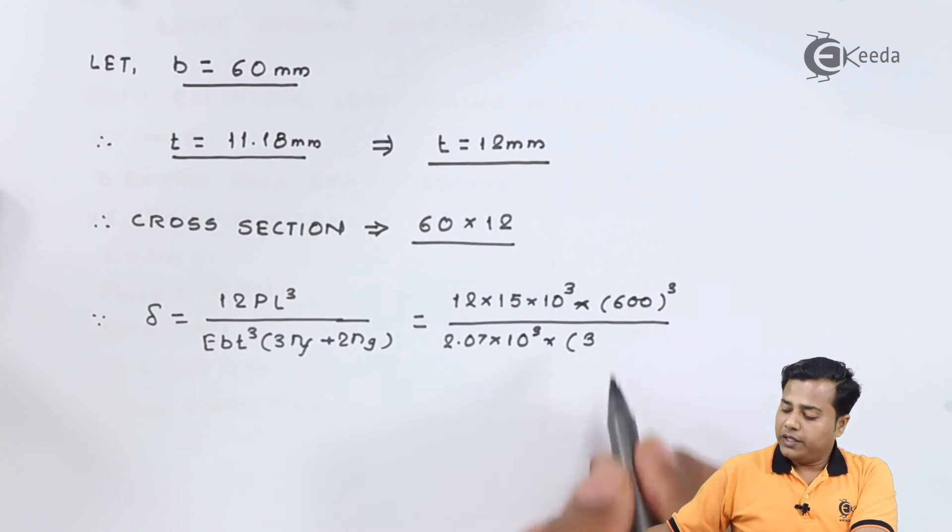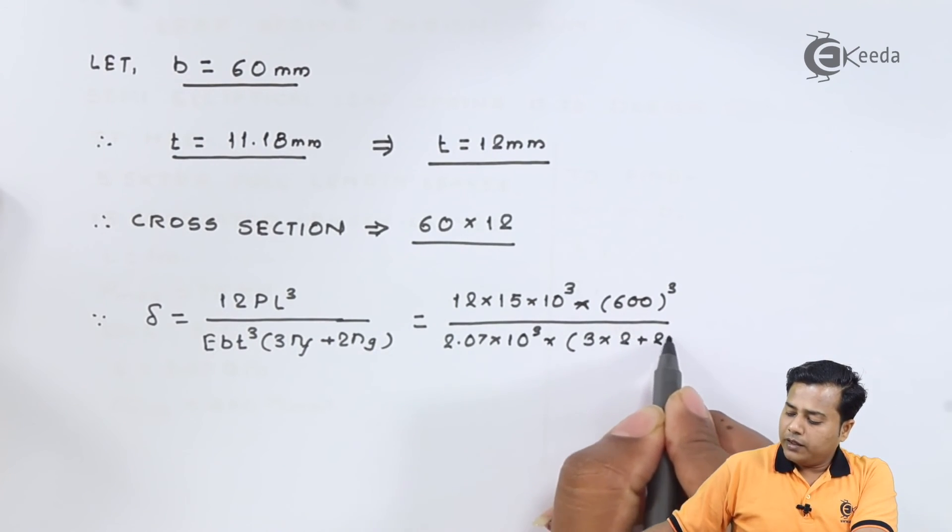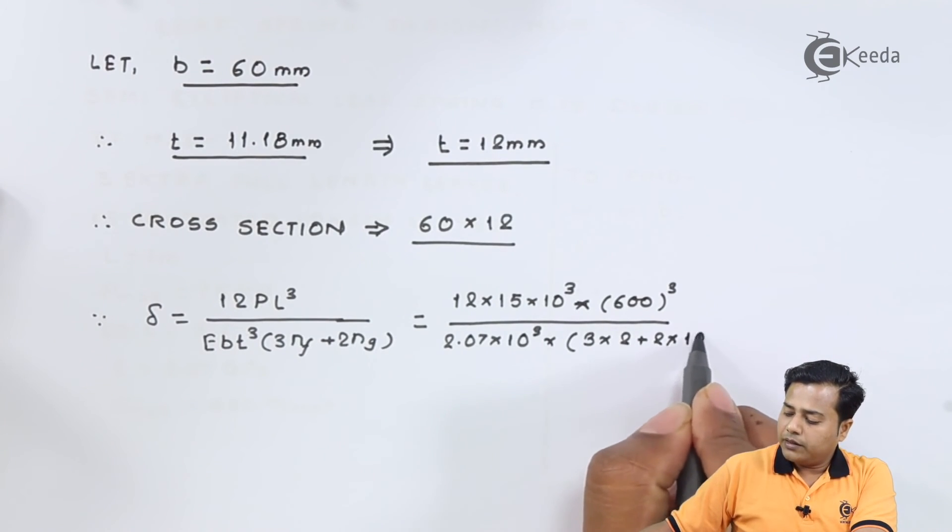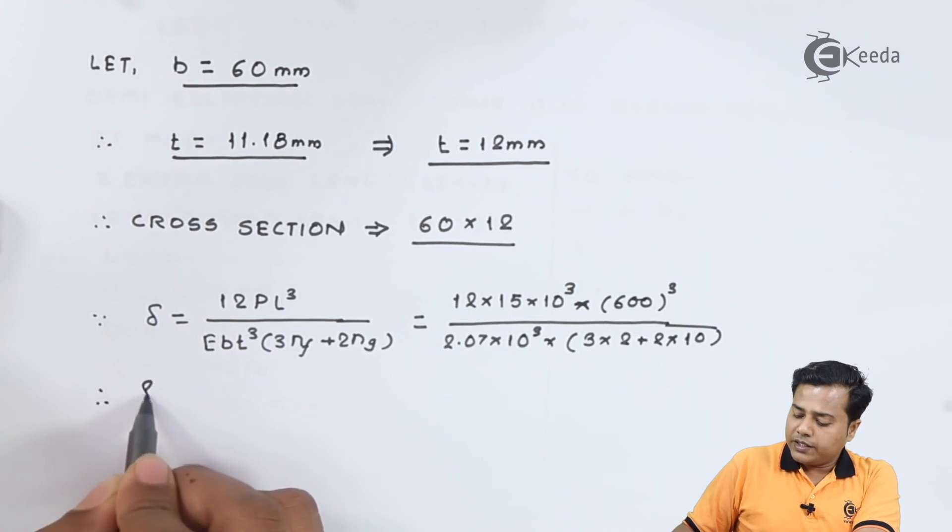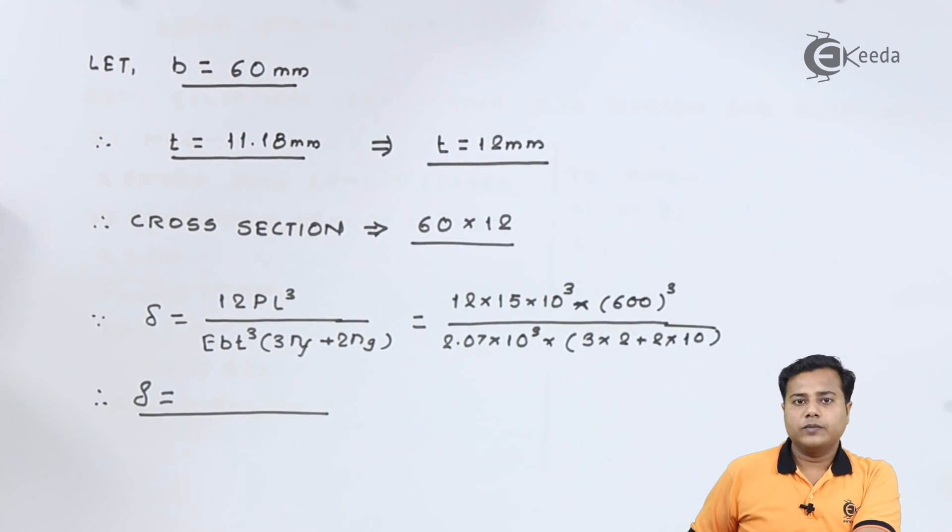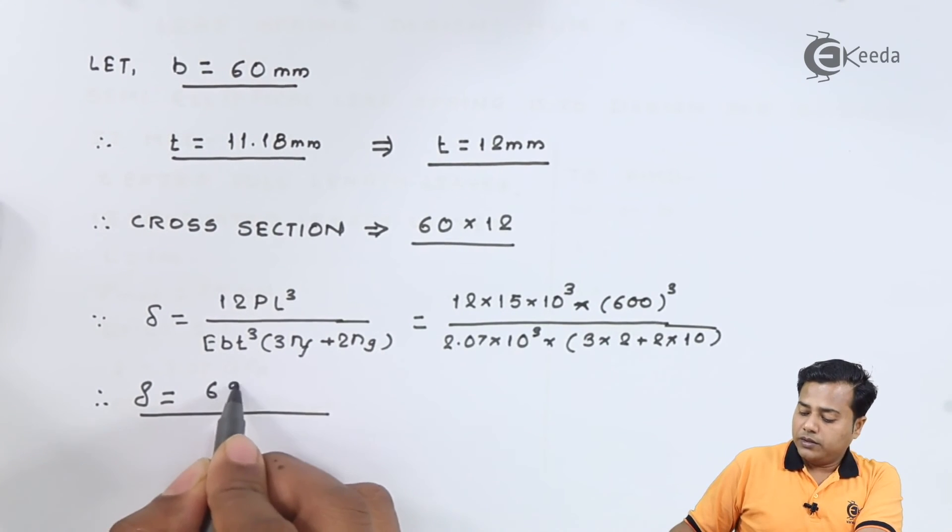Number of full length are 2 and number of graduated are 10. After evaluating this expression we will get delta equal to somewhere around 69.68 millimeter.